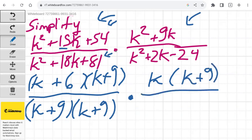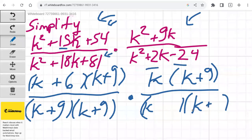And then in the denominator, we set up our parentheses with k as the first term. Now we need to think of two factors of minus 24 that, when added together, get us plus 2. Well, plus 6 times minus 4 equals negative 24, and positive 6 minus 4 equals plus 2. So let's have plus 6 and then minus 4.